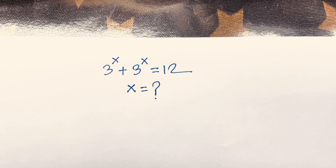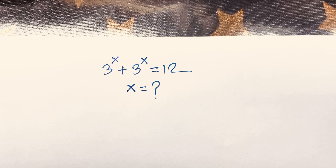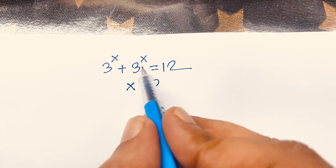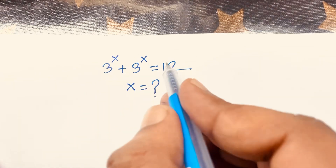Our question is 3 to the power x plus 3 to the power x is equal to 12, and we'll find out what is the value of x in this junior math olympiad question. It is an interesting math problem, so let's start.